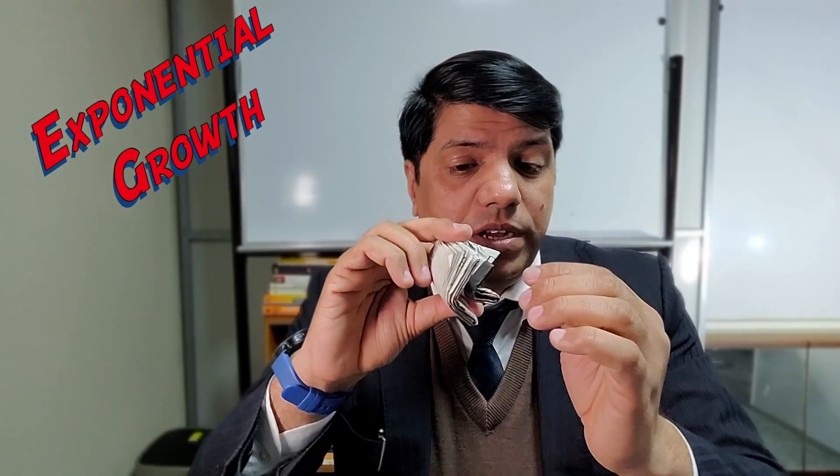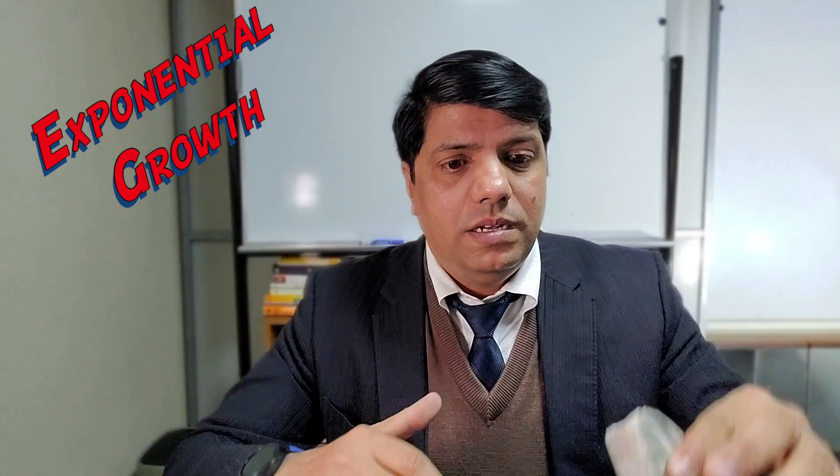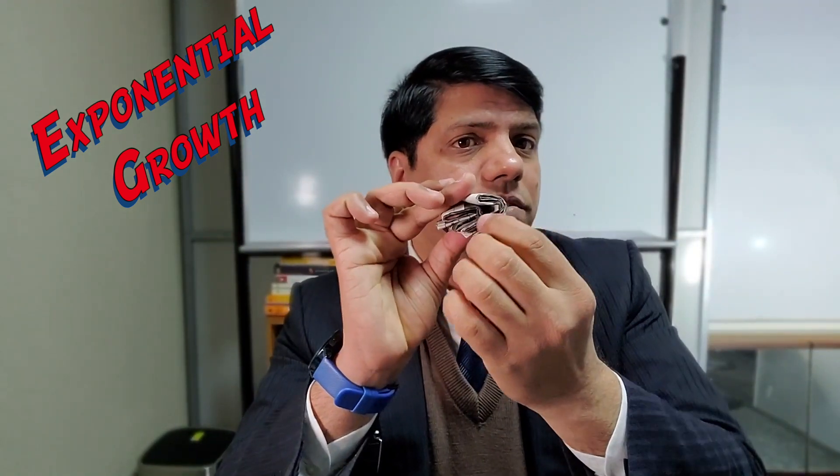Can you imagine how many layers of paper you have after the eighth fold? Give a guess — maybe 30, 40, 50, or 60 layers? No. Actually, if you are able to fold it eight times, then it's two to the power of eight. That's what you call exponential growth — it doubles every time.